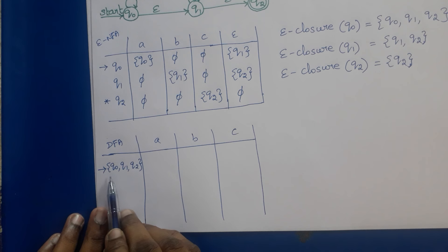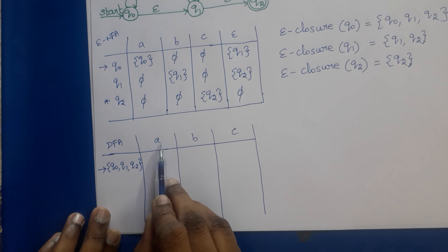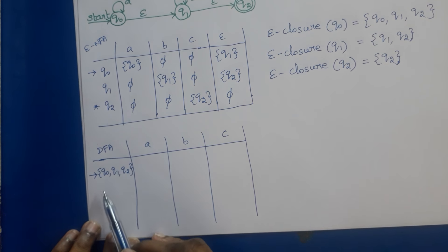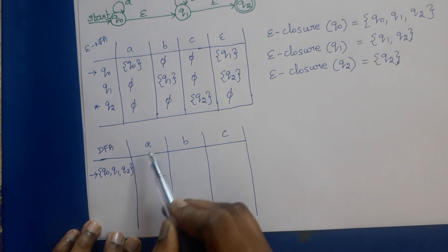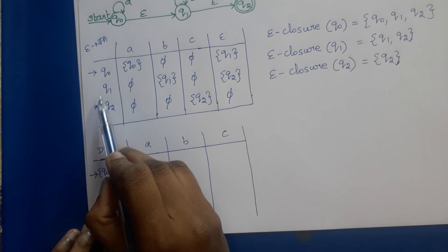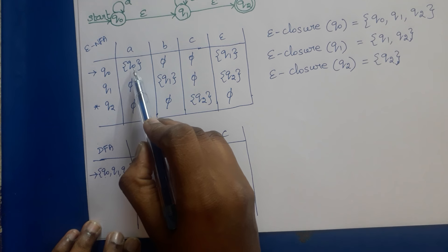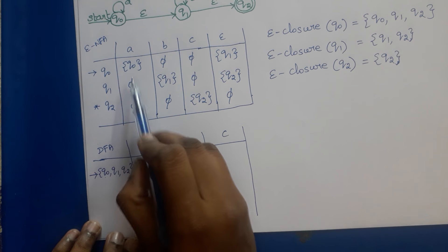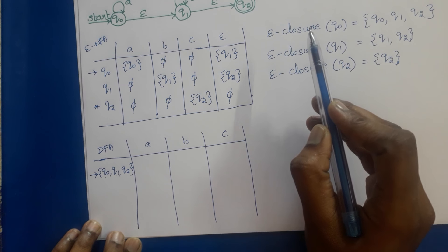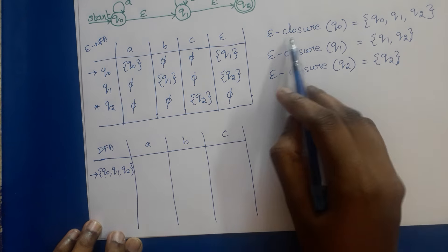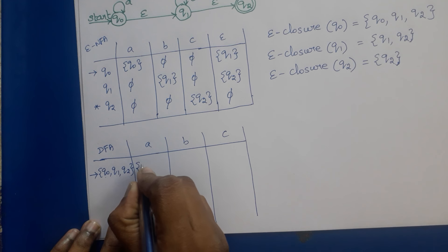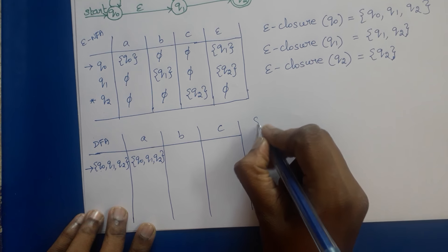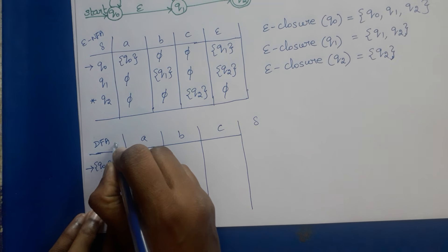Now we need to find the transitions. To find delta_D of {Q0, Q1, Q2} on A, we compute the union of delta_E(Q0, A), delta_E(Q1, A), and delta_E(Q2, A). That gives Q0 ∪ phi ∪ phi = Q0. After finding this union, we take the epsilon closure of the result. Epsilon closure of Q0 is {Q0, Q1, Q2}. So delta_D({Q0, Q1, Q2}, A) = {Q0, Q1, Q2}.